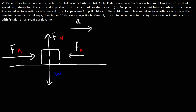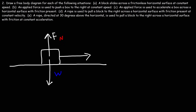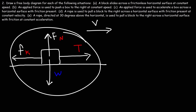For part D, a rope is used to pull a block to the right across a horizontal surface with friction at constant velocity. The normal force and weight force will still be the same. We're moving at constant velocity, so the forces in the x direction must be balanced. We're using a rope to pull the block, so that's our tension force. Friction always opposes motion — if we're moving to the right, friction is directed to the left. Fk has the same length as the tension force vector.